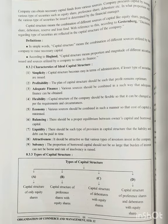Fifth is economy — various resources should be combined in such a manner that the cost of capital is minimized. Sixth is balancing — there should be a proper equilibrium between the owner's capital and the borrowed capital, so that the load does not increase.